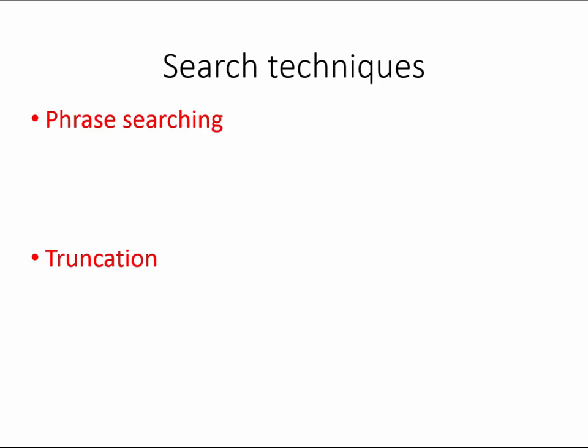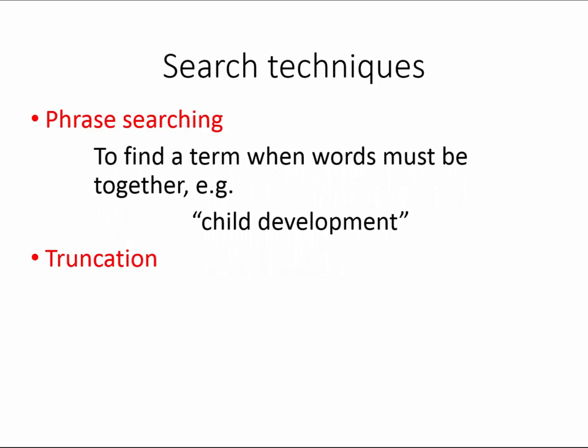Phrase searching was used earlier to search for "child development" as a phrase. Without the speech marks, it will show all results that have just "child" or just "development." By phrase searching, the results will only show items where "child" and "development" occur together.